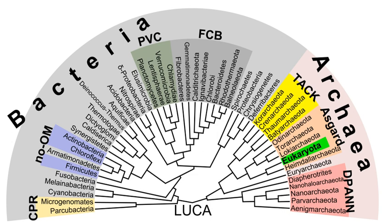The oldest known fossilized prokaryotes were laid down approximately 3.5 billion years ago, only about 1 billion years after the formation of the Earth's crust. Eukaryotes only appear in the fossil record later and may have formed from endosymbiosis of multiple prokaryote ancestors. The oldest known fossil eukaryotes are about 1.7 billion years old. Some genetic evidence suggests eukaryotes appeared as early as 3 billion years ago. Some have suggested there is evidence on Mars of fossil or living prokaryotes, though this possibility remains the subject of considerable debate and skepticism.